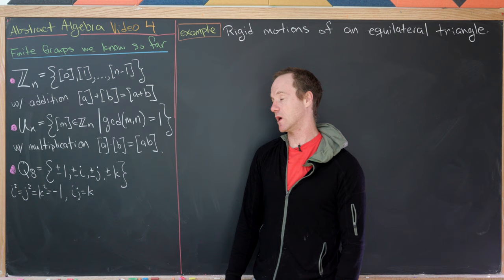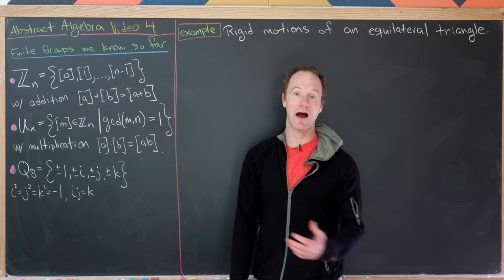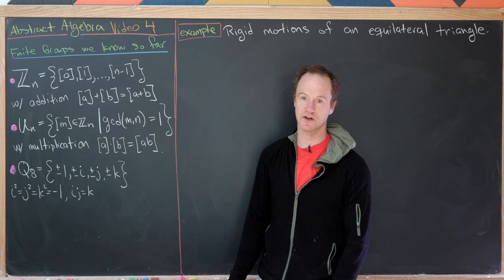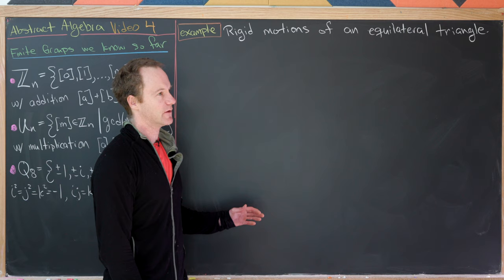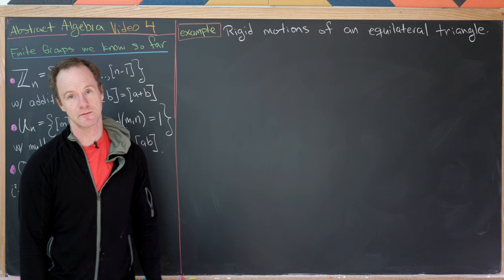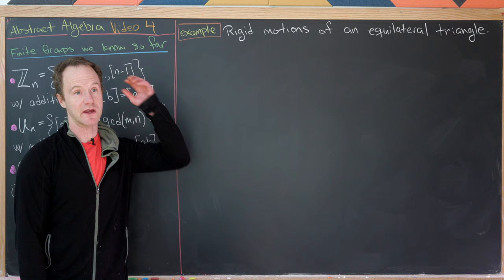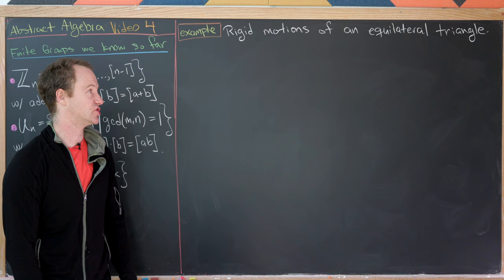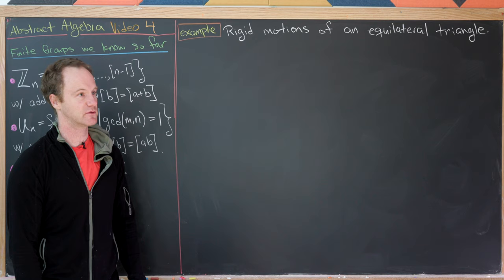If you need to review these groups now would be a good time. Today we're going to be talking about symmetry groups of polygons — specifically what types of rigid motions we can act on polygons. By rigid motions I mean geometric transformations that leave the object unchanged. We'll look at the simplest regular polygon, the equilateral triangle.